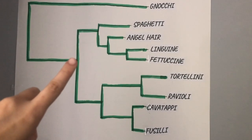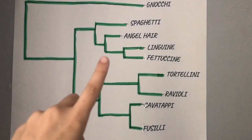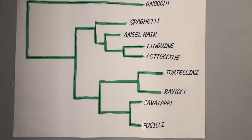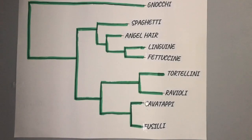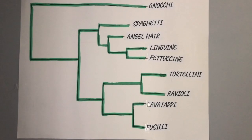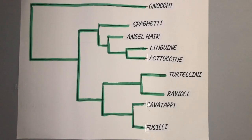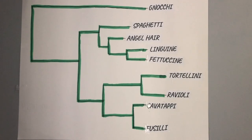Here is the common ancestor of these types of pasta. This common ancestor must have contained a flour and wheat base. This tree contains many internal nodes, which represent a common ancestor where the species diverge.